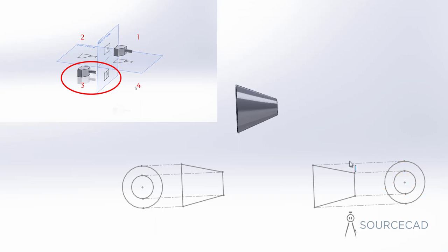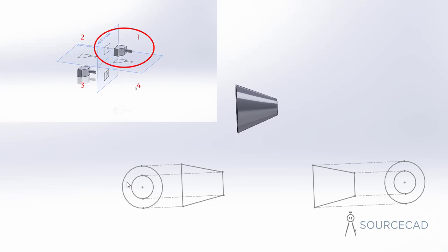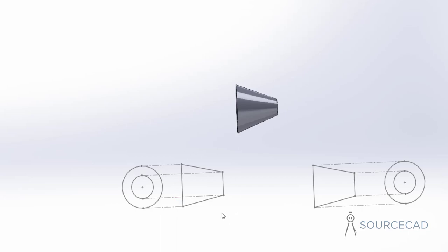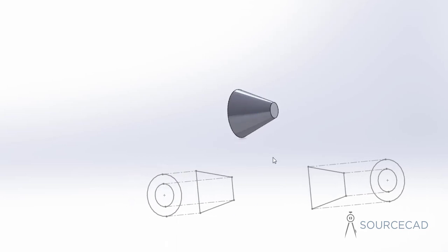That's third angle of projection — the right side view is on the right side, and both circles are visible in the concentric circle set on the right. But in the other symbol, this concentric set is on the left side, meaning the view is placed on the opposite direction — that's first angle of projection. In a nutshell, the position of the concentric circles decides first or third angle of projection. If the concentric circle is on the side where both circles are visible, that's third angle; if it's on the opposite side, that's first angle.